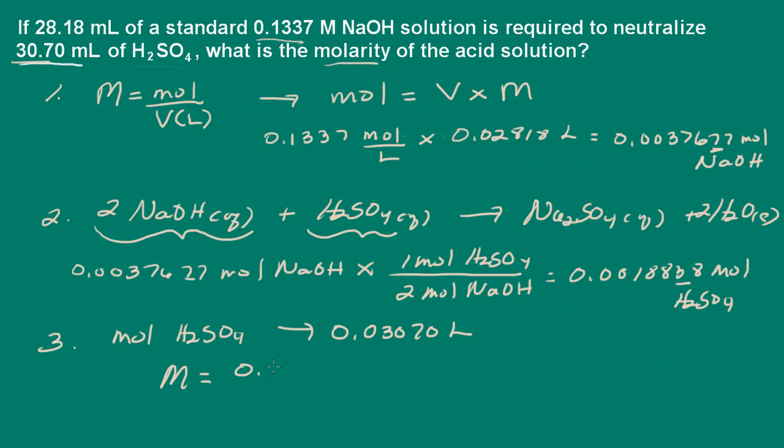I just go ahead and take the number of moles of the sulfuric acid and divide by the volume. And I end up with 0.06136 molar. And this is to the correct number of significant figures.